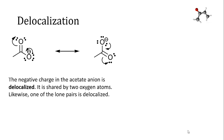Likewise, one of the lone pairs is delocalized. We can see that that lone pair is found on one of the oxygens in the first structure and the other oxygen in the second structure. From a more sophisticated bonding theory that we will learn about later when we study conjugated systems, it turns out that not just one of the lone pairs is delocalized, but the pi bond is delocalized also. For the moment, that's not so important to us.